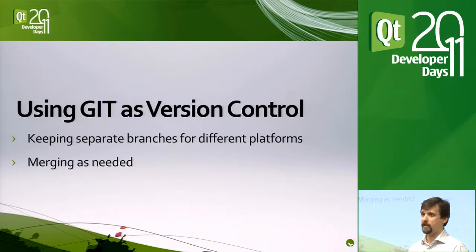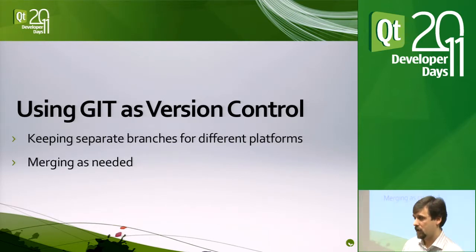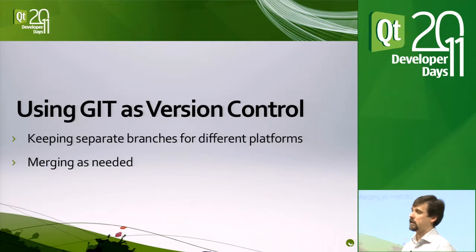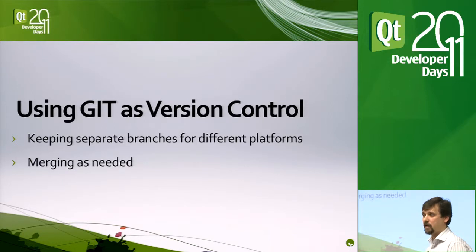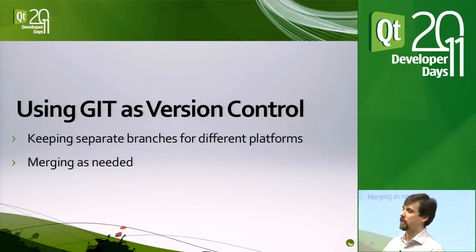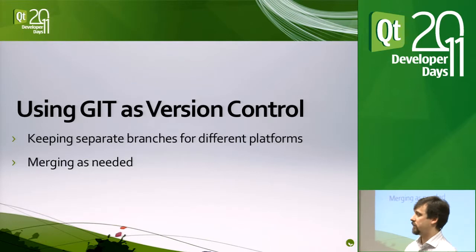The best developer's friend in this respect is Git. We keep separate branches for different platforms and merge them as needed. Alternatively, you do all development in one branch as your master platform and then have separate branches for different platforms.